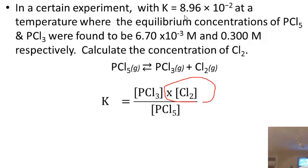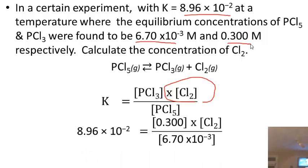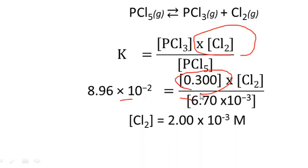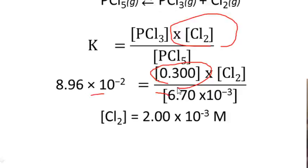Now insert the known values. K equals 8.96 times 10 to the minus 2; the concentration of PCl₅ is 6.70 times 10 to the minus 3; and the concentration of PCl₃ is 0.3. Solving for the unknown concentration of Cl₂, you multiply 8.96 times 10 to the minus 2 by 6.70 times 10 to the minus 3, then divide by 0.3. The concentration of Cl₂ is found to be 2.00 times 10 to the minus 3 molar. That's it.